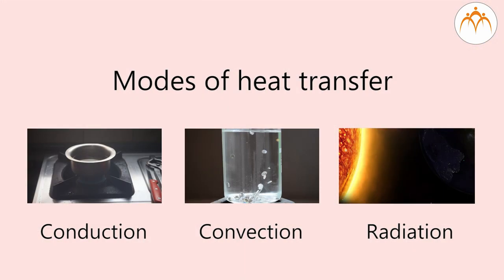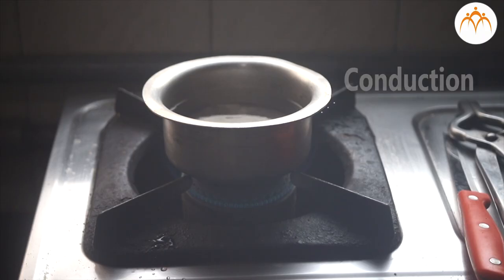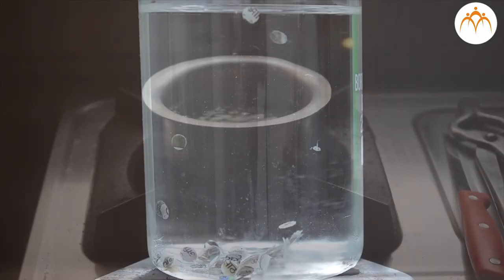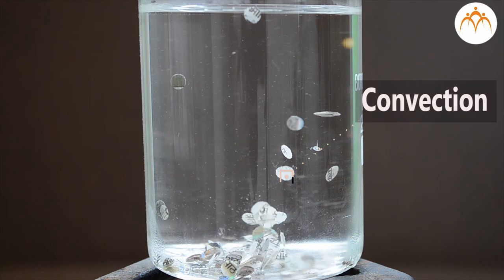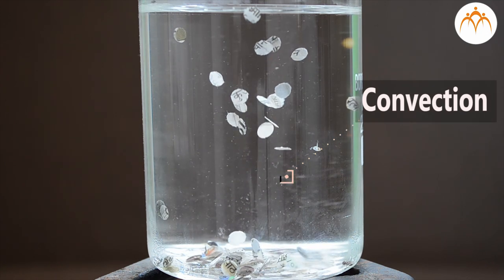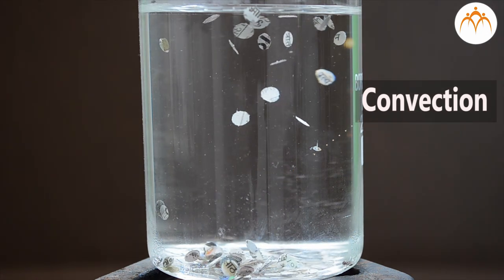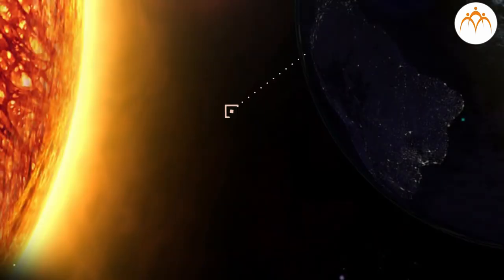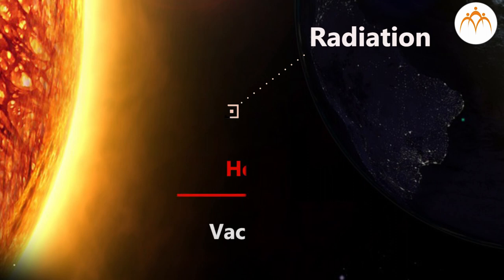There are three ways in which heat is transferred. First one is conduction — heat is transferred in solids by conduction. Second is convection, which takes place in all fluids, liquids and gases. Third one is radiation, which does not need a medium for heat transfer.